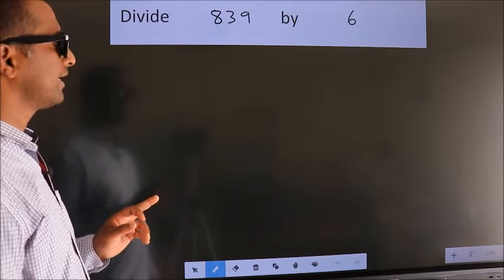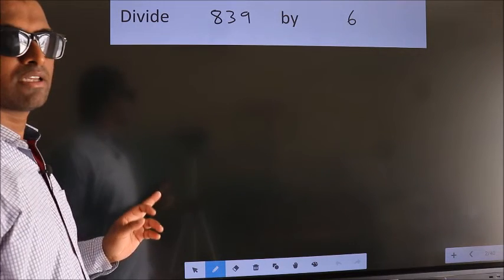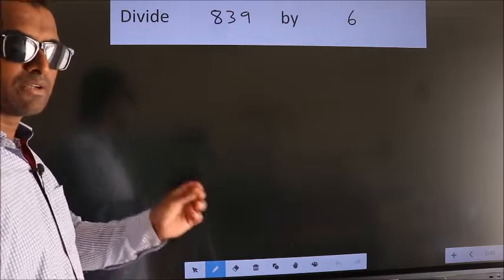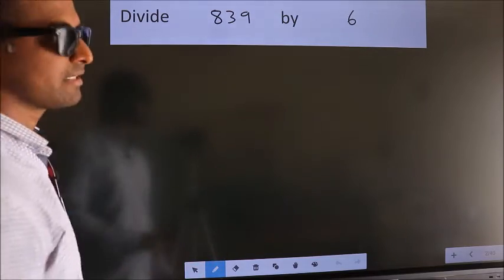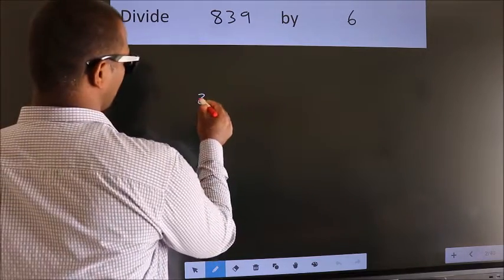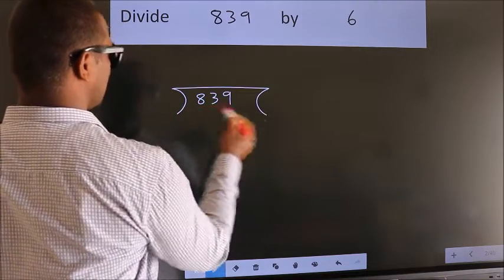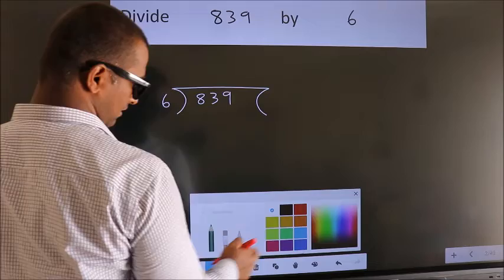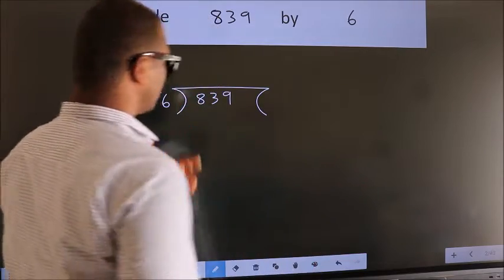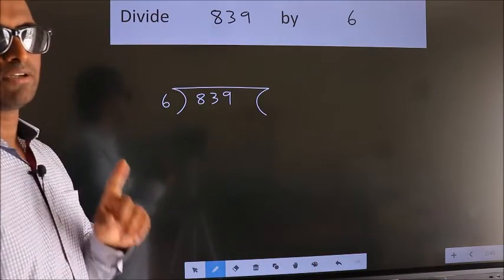Divide 839 by 6. To do this division, we should frame it in this way. 839 here, 6 here. This is your step 1.